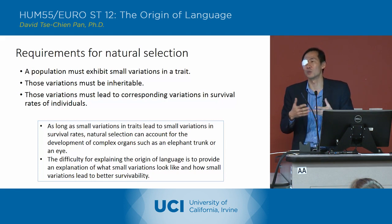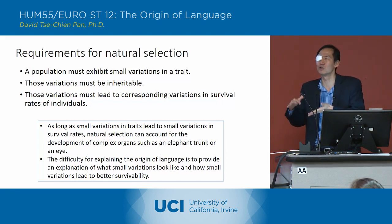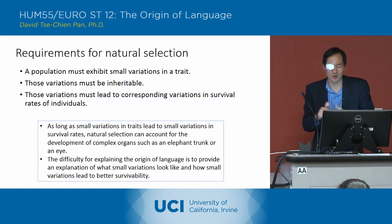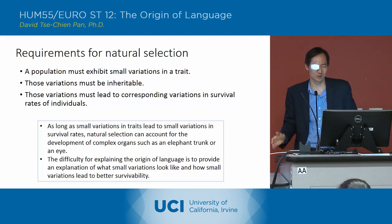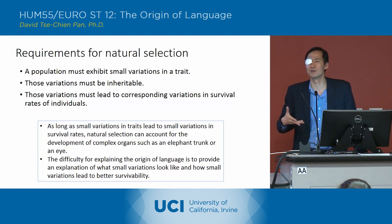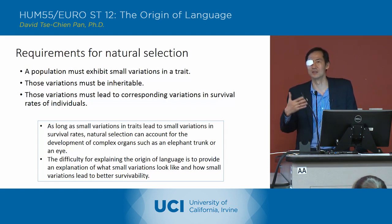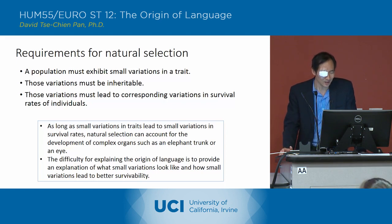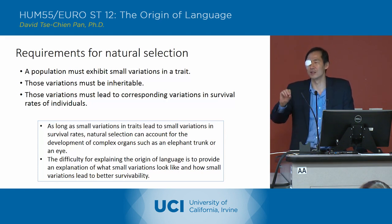There are these incremental improvements in the ability to perceive light and then perceive images. You could imagine that could have an effect on the survival rates of individuals who have those variations that improve the ability to see. That would be the way in which the eye could develop into a very complex organ very gradually.